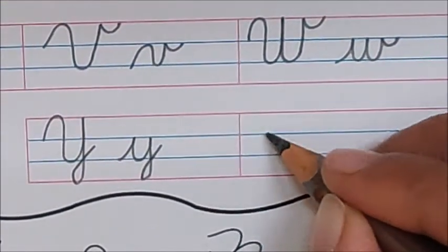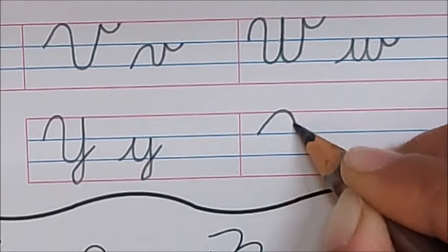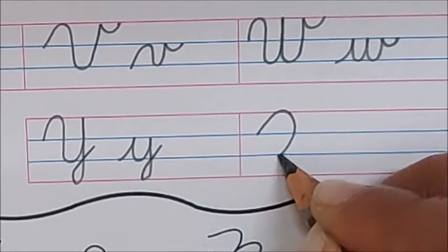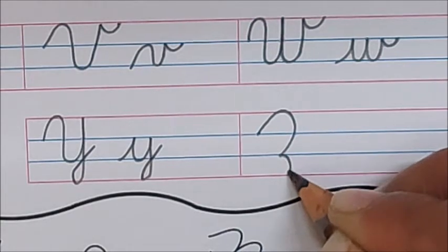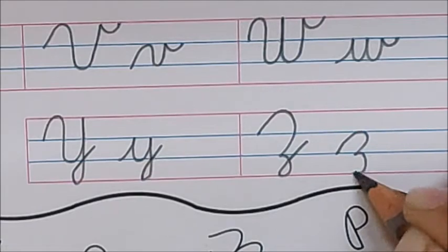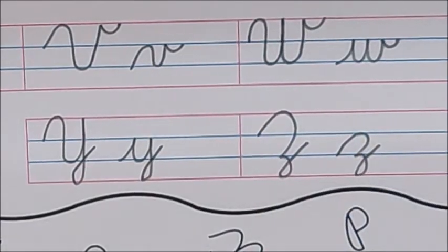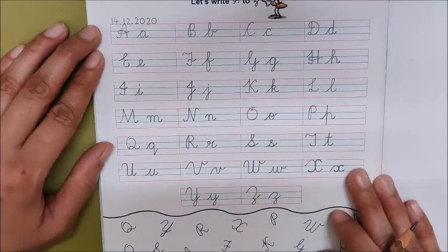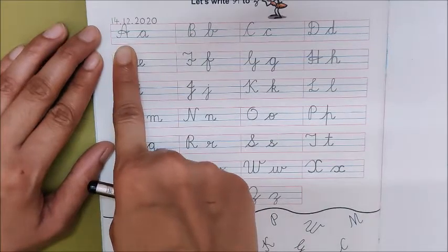Now, last Z. Slanting line. Make a big half round till the last blue line. Now, one more small half round and tail. Z. See, we have completed writing of A to Z.